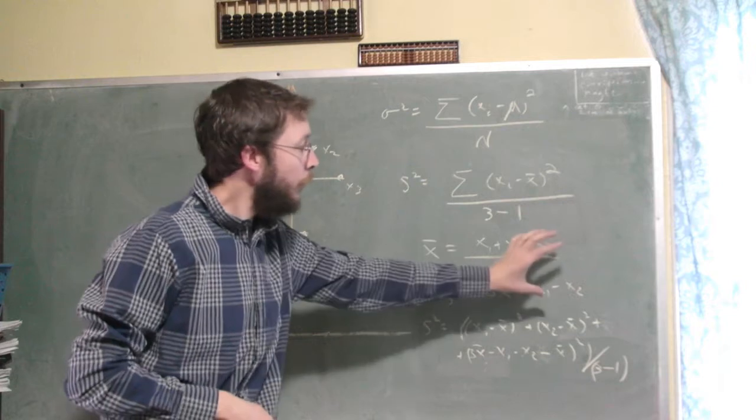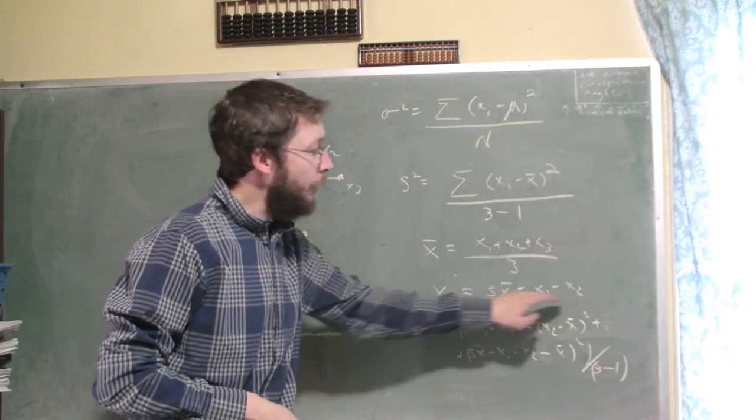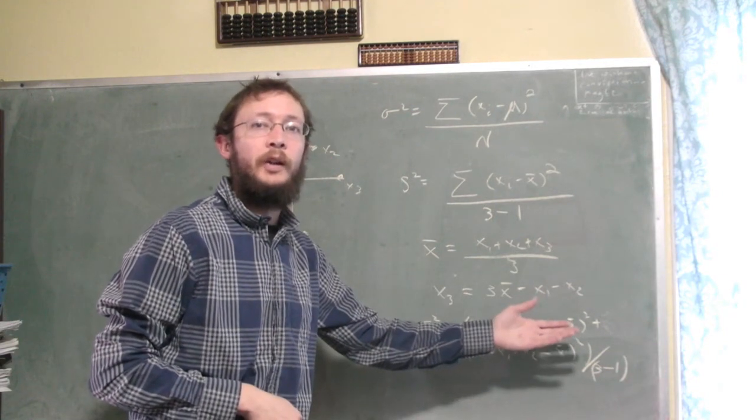Any time you estimate a population parameter, what that does is it gives you an equation, and you can solve that equation for one of the free variables in terms of the other two.